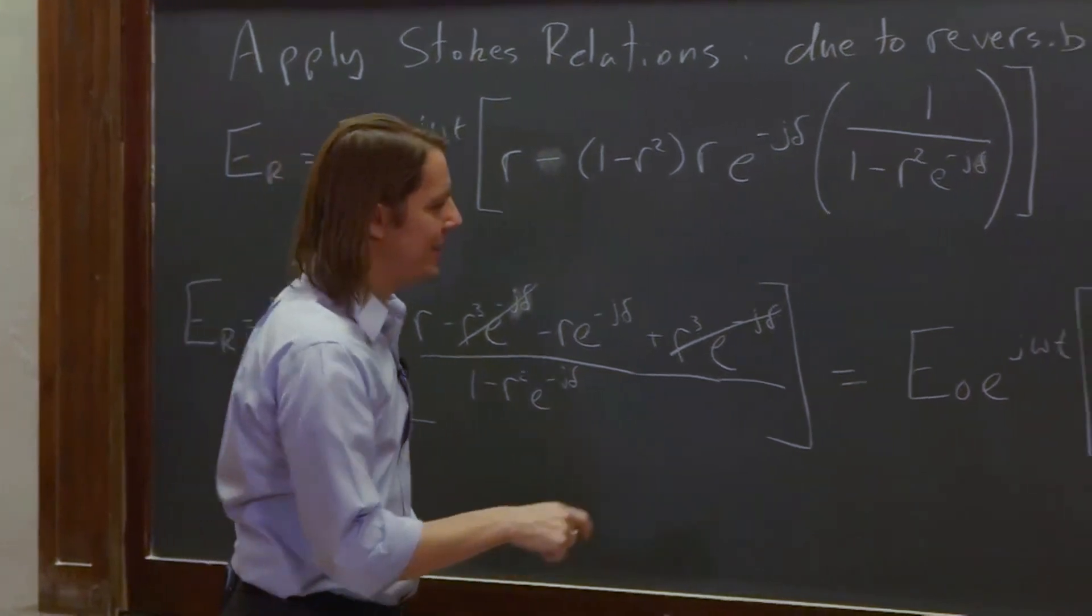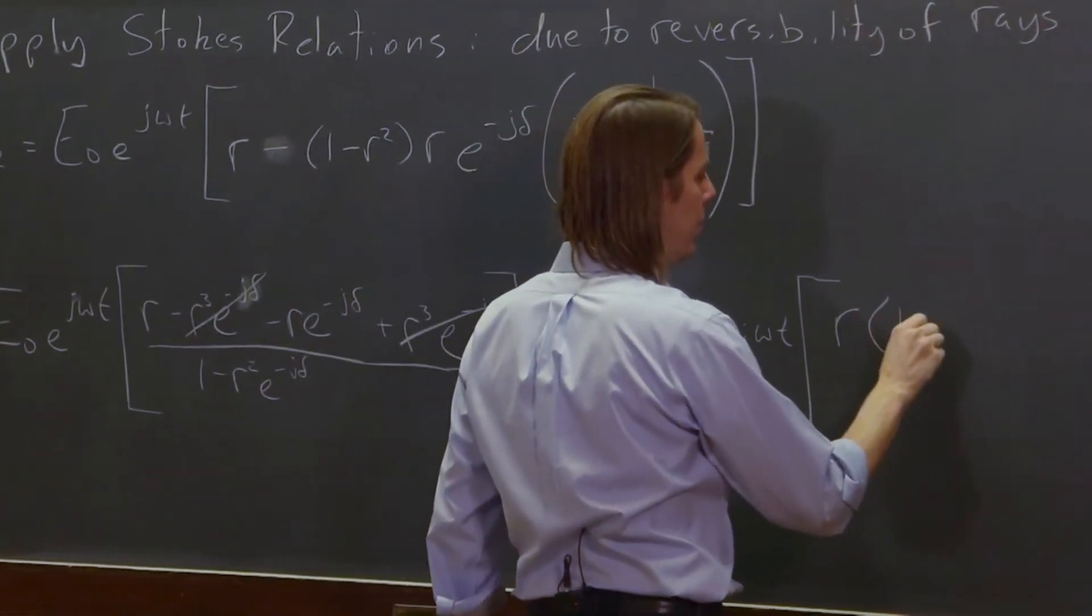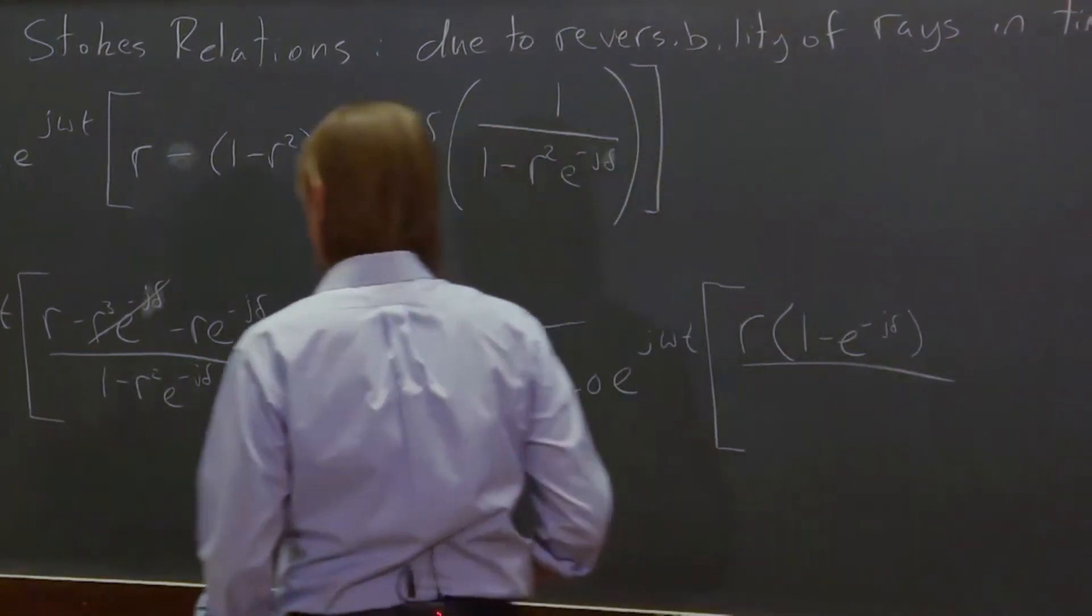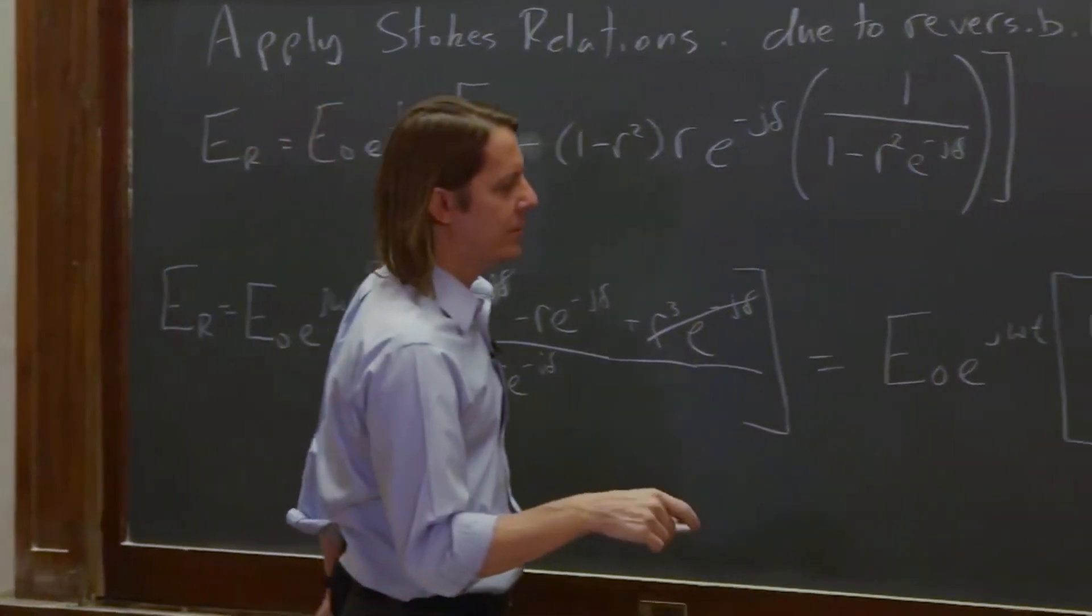It's 1 minus e to the minus j delta. So r 1 minus e to the minus j delta over 1 minus r squared e to the minus j delta.